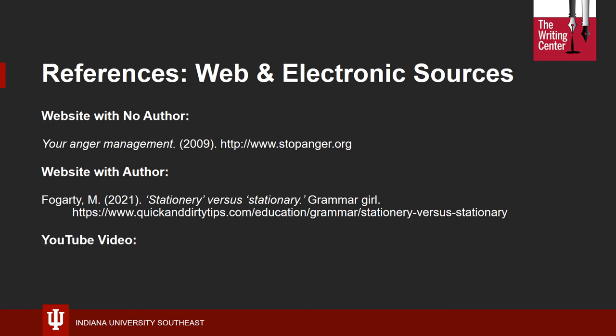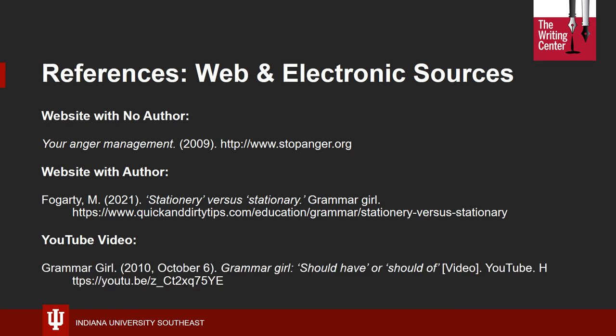An increasingly common citation type is a YouTube video. Begin by listing the username of the YouTube creator who posted the video, and then provide the date the video was published. Next, give the full name of the video with only the first word and the first word of any subtitle capitalized. Then, in brackets, write the word "Video." You will then need to list the publisher as YouTube and provide the URL for the video.